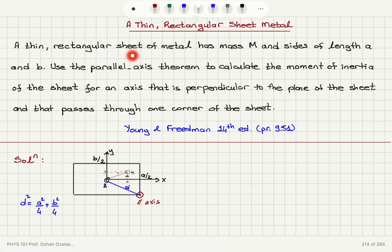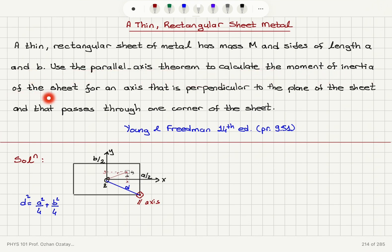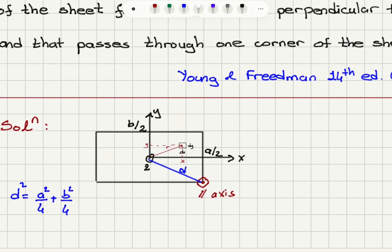A thin rectangular sheet of metal has mass M and sides of length A and B. Use the parallel axis theorem to calculate the moment of inertia of the sheet for an axis that is perpendicular to the plane of the sheet and that passes through one corner of the sheet.